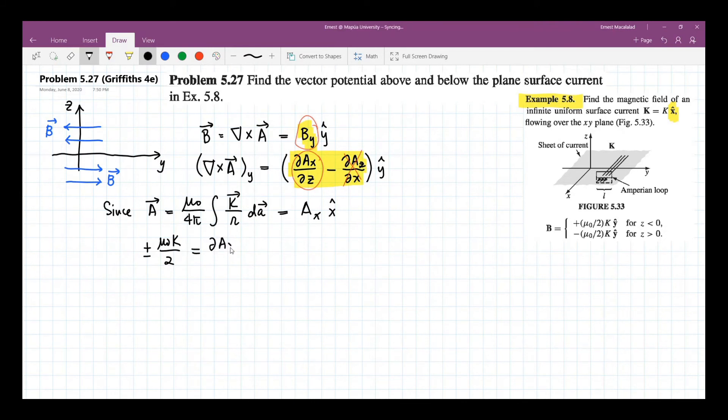And this is equal to derivative of Ax. This becomes a total derivative of Ax with respect to z. So solving this differential equation, we now have A with two values.